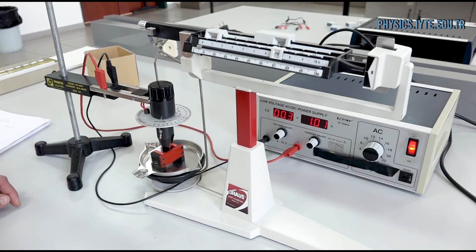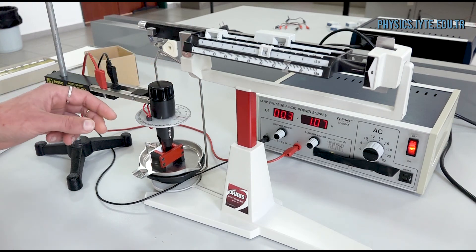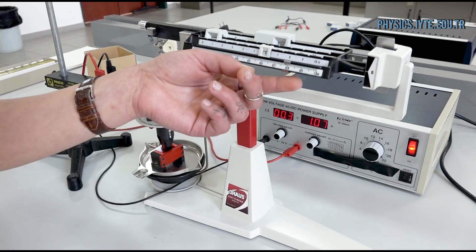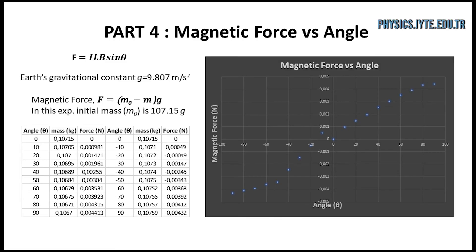After recording this value, the angle of the wire apparatus is changed in 10-degree intervals up to 90 degrees, recording each new mass value. The relation between magnetic force and the angle between wire direction and magnetic field is examined. The graph constructed from the data shows a sinusoidal relation between force and angle, compatible with the theoretical expectation. When the angle is zero degrees — wire and magnetic field parallel — the force is zero. As the angle increases, the force increases, and at 90 degrees, when the wire and magnetic field are perpendicular, the magnetic force reaches its maximum value.